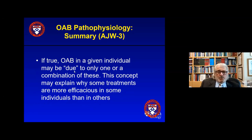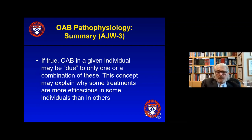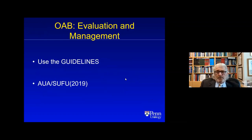My personal opinion is that there's no single hypothesis explaining all instances of involuntary bladder contractions or occurrences of urgency and frequency. I think four concepts are valid: faulty central inhibition, myogenic changes, Carl Eric's acetylcholine leak, and urothelial initiation by release of excitatory neurotransmitters with distension. This may explain why some treatments are more efficacious in some people than others.